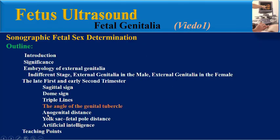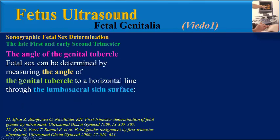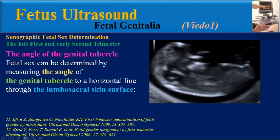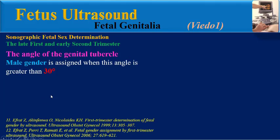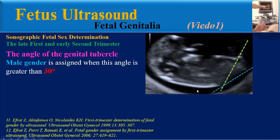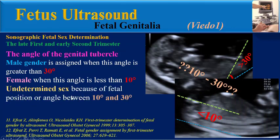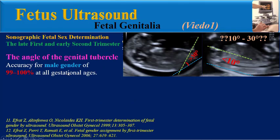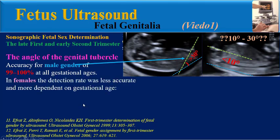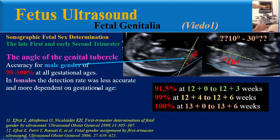The angle of the genital tubercle: According to some studies, fetal sex can be determined by measuring the angle of the genital tubercle to the horizontal line through the lumbosacral skin surface. Male gender is assigned when this angle is greater than 30 degrees, female when less than 10 degrees, and undetermined when the angle is between 10 and 30 degrees due to fetal position. The accuracy for male gender using this angle is about 99 to 100% at all gestational ages.